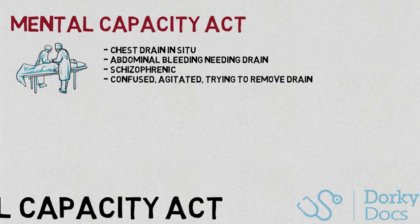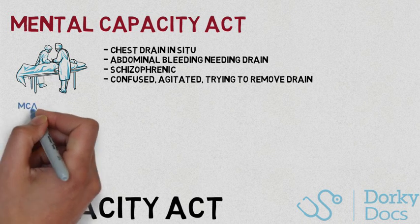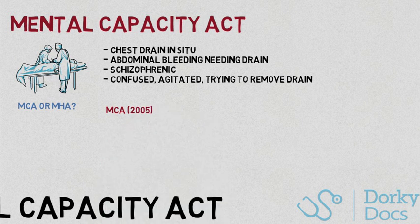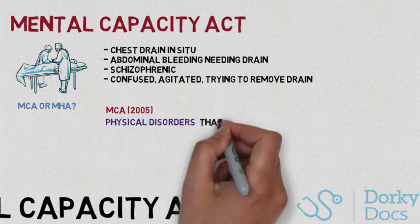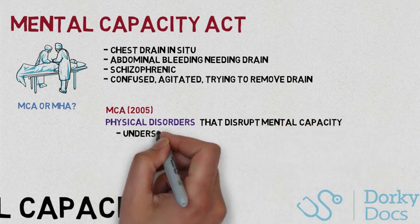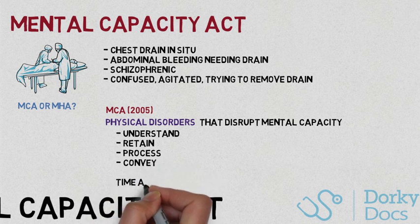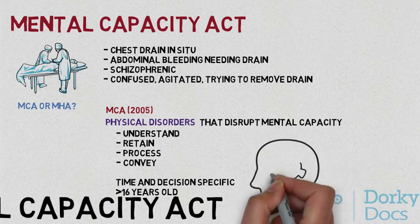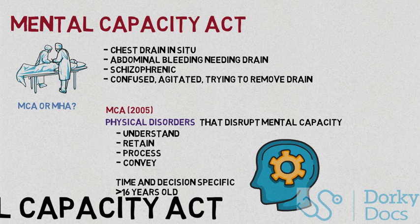The first thing we need to consider when acting in a patient's best interests against their wishes is whether we're using the Mental Capacity Act or the Mental Health Act. The Mental Capacity Act of 2005 is primarily used for physical disorders that disrupt mental function, and its principles rely on whether a patient can understand, retain, process, and convey information for a specific time-sensitive question. Some patients may have capacity for simple questions but not for complex treatment decisions. Remember, it's only for patients over 16 years old. You must also show that you've taken all necessary steps to help the patient establish capacity, and recognise that an unwise decision doesn't necessarily mean a lack of capacity.